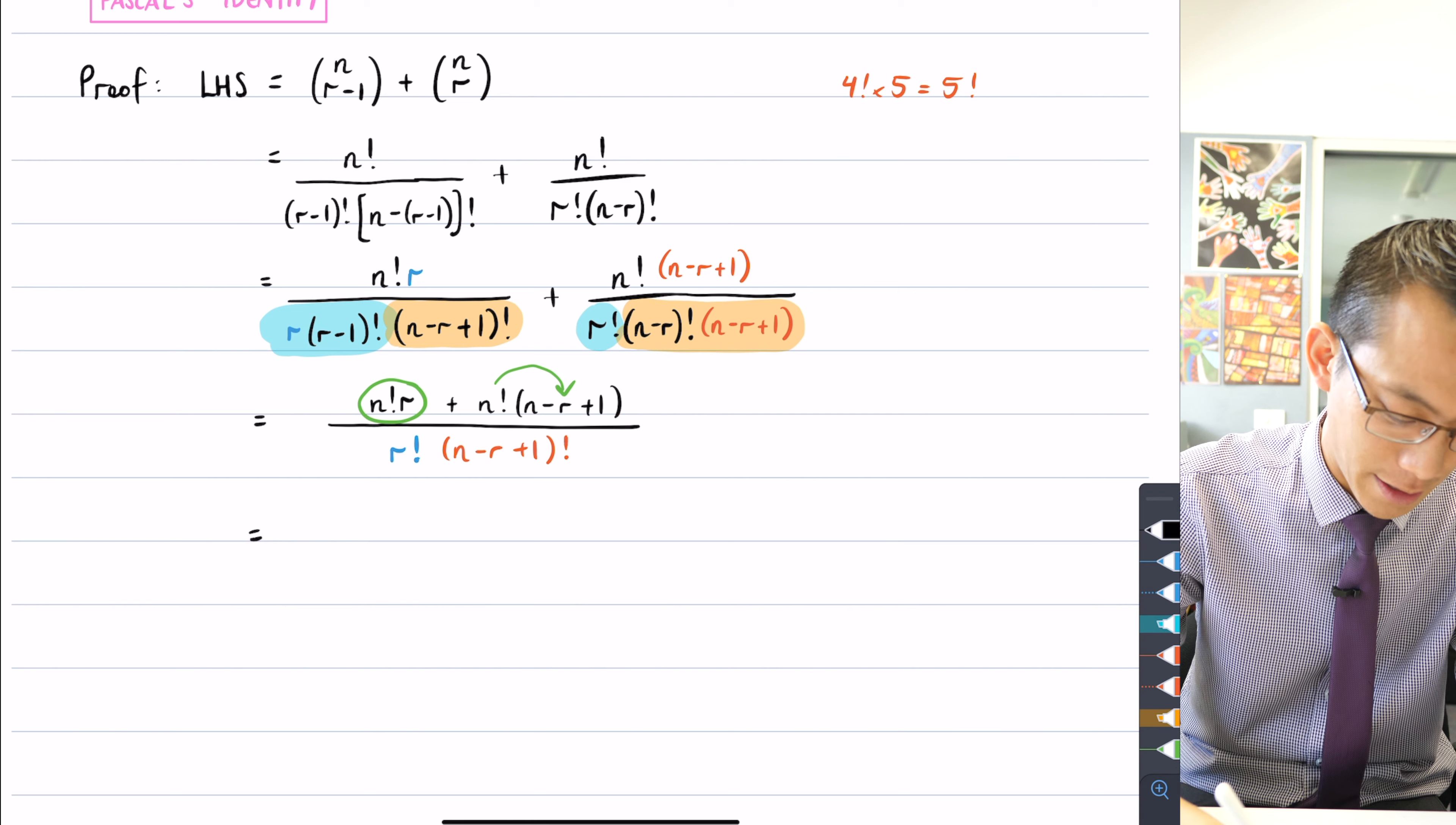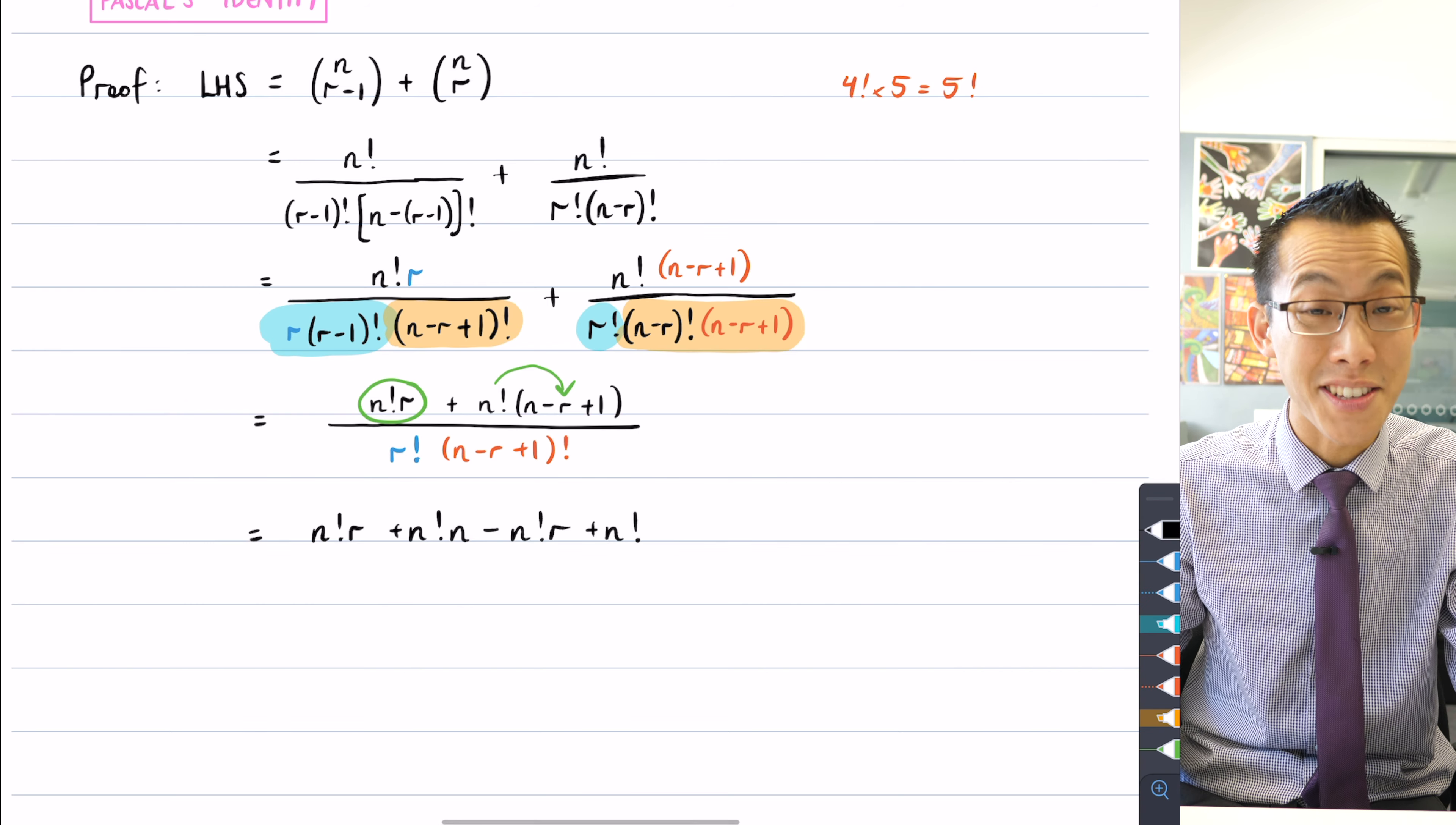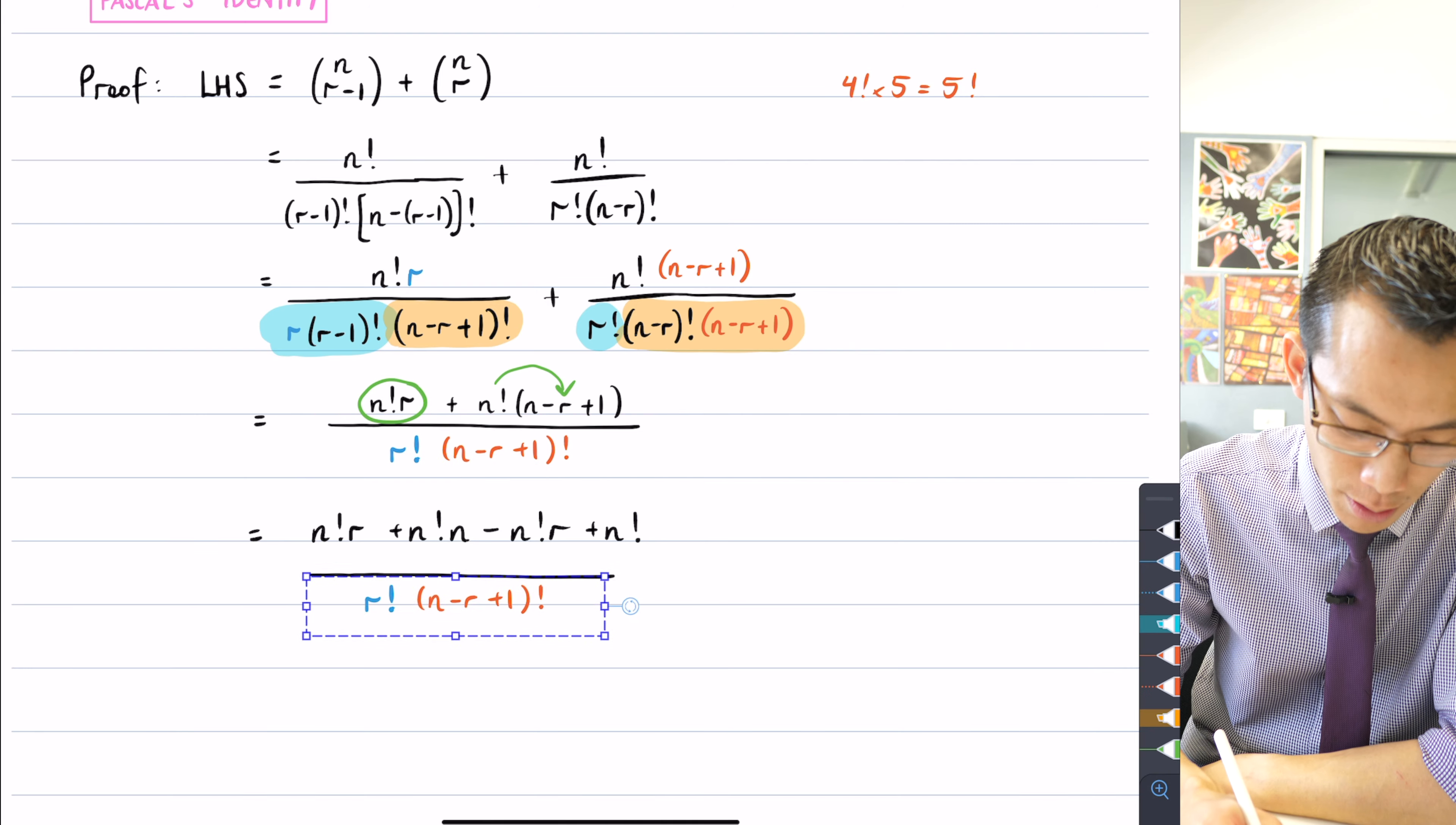Let's go ahead and expand so we can see it clearly. n factorial r at the front, I'm getting n factorial n minus n factorial r plus n factorial, that's a lot of n factorials. And then I haven't really changed anything on my denominator so I'll just pop it down there again.